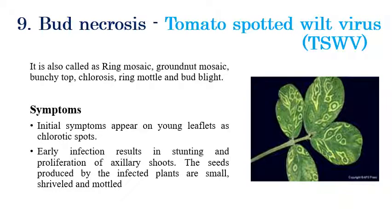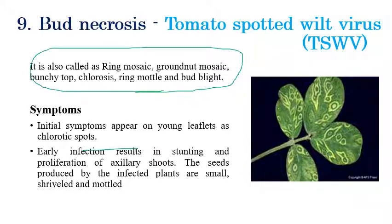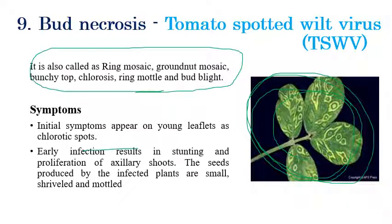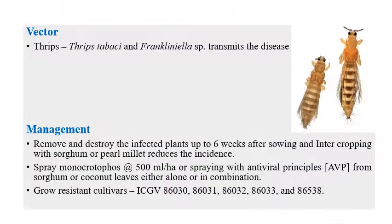Bud necrosis is caused by Tomato Spotted Wilt Virus. It is also known as ring mosaic, groundnut mosaic, bunchy top of mosaic, chlorosis mosaic, ring mottle, or bud blight. Symptoms include chlorotic spots on young leaves and leaflets, proliferation of axillary shoots, stunting of plants, and production of small shriveled and mottled seeds. Chlorotic streaks or mottles are the identification symptom of bud necrosis.